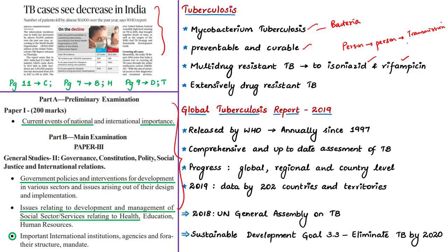Isoniazid and rifampicin are the two most powerful first-line anti-tuberculosis drugs. When an individual does not respond to these two medicines, they suffer from multi-drug resistant tuberculosis (MDR-TB). To overcome this, second-line drugs can be used. However, certain individuals do not respond to the most effective second-line drugs either — this case is called extensively drug-resistant tuberculosis (XDR-TB).